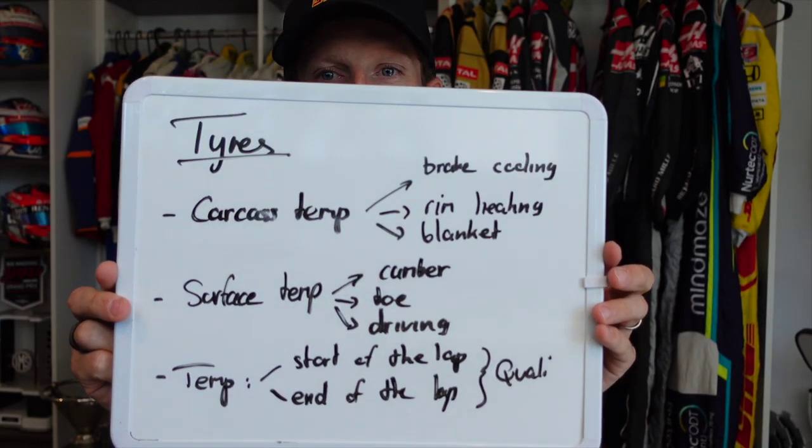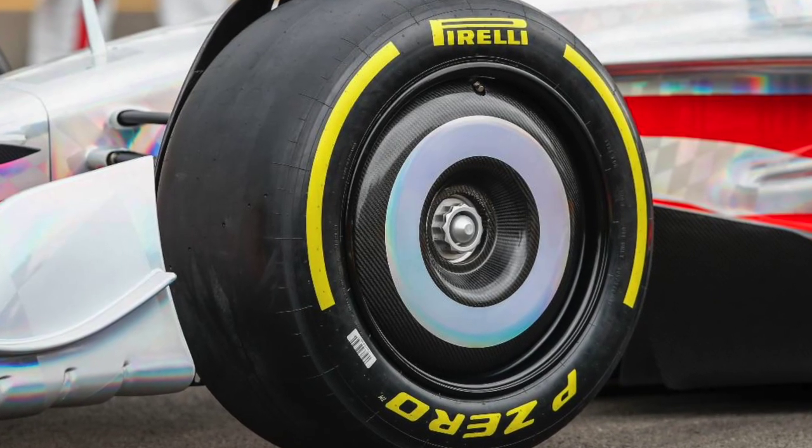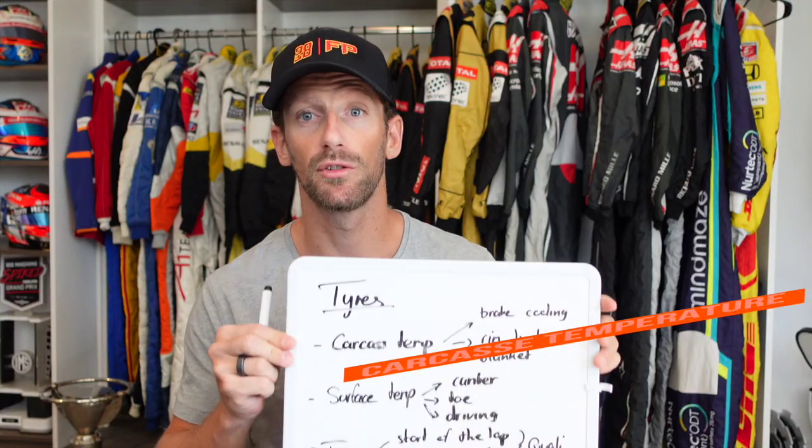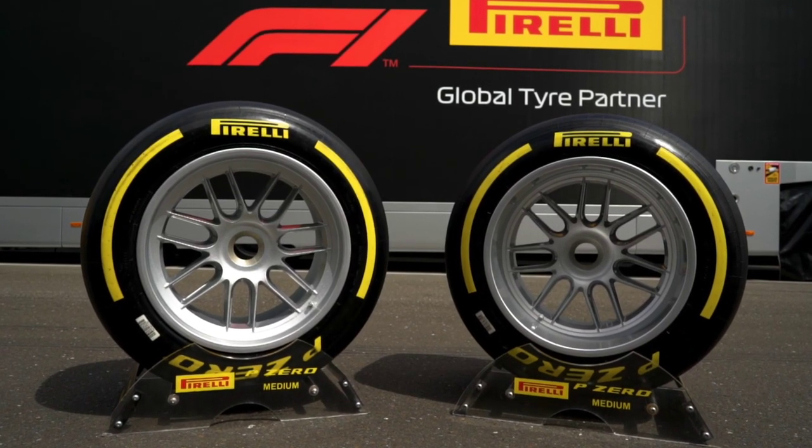Then: tires. Within tires we've got a few things. Carcass temp — what is carcass temp? It is the temperature of the carcass of the tire. It is the most important one if you want to generate grip. A tire is just a chemical part — rubber, chemicals — and if it gets to the right temperature, it melts just enough that it sticks to the ground.